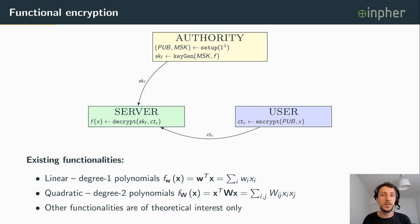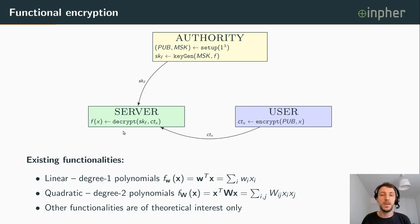What is functional encryption? Functional encryption is a public encryption scheme where three parties are involved: a user, a server, and an authority party. The user encrypts their data X using a public key, and the authority has the ability to generate special secret keys associated to a functionality F. The server can use this special secret key to decrypt the user data, and contrary to usual public key encryption, the server does not obtain X in plaintext, but obtains the application of functionality F over X.